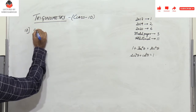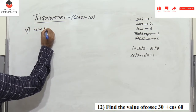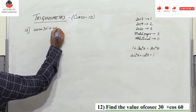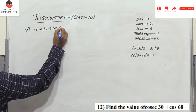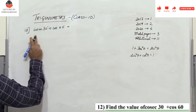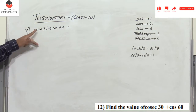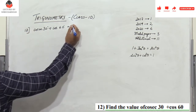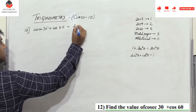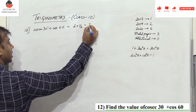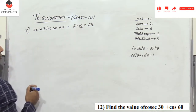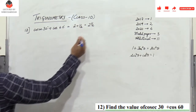Problem 12: cosec30° + cos60°. We know cosec30° = 1/sin30°. Since sin30° = 1/2, cosec30° = 2. And cos60° = 1/2. So the answer is 2 + 1/2 = 2½, or 5/2.